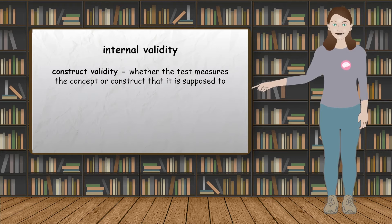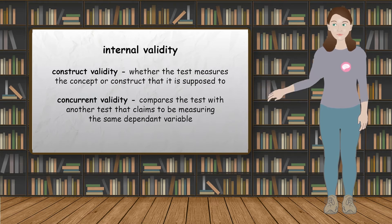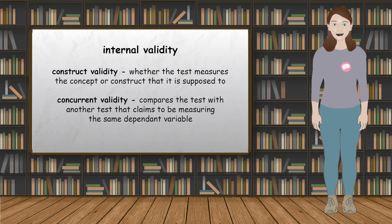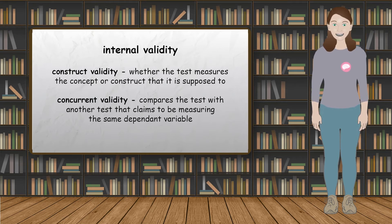And concurrent validity, sometimes also known as criterion validity, which compares the test with another test that claims to be measuring the same dependent variable. For example, giving a person two different tests on the same thing and seeing whether they get a similar score.